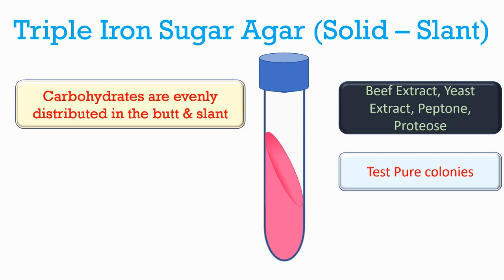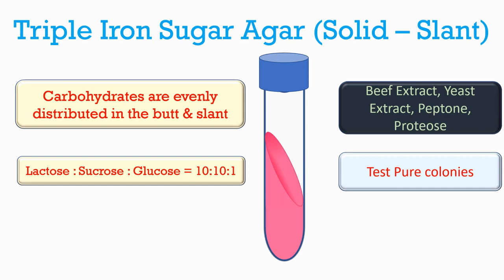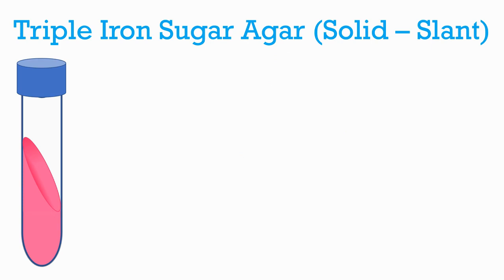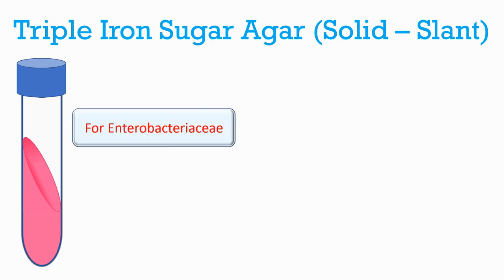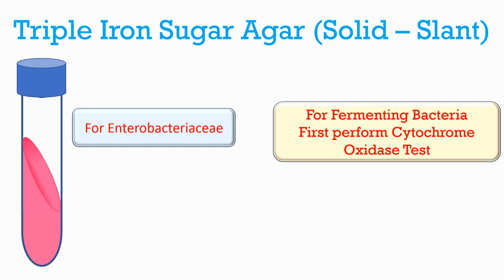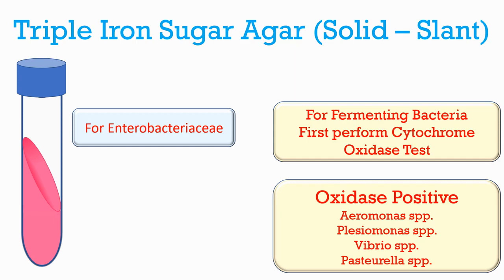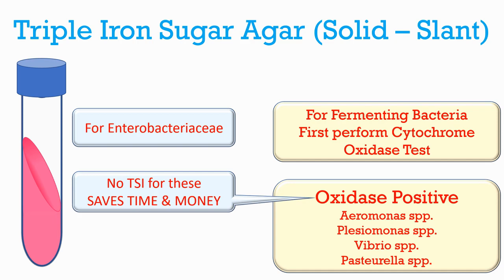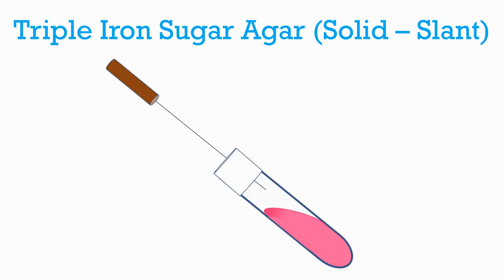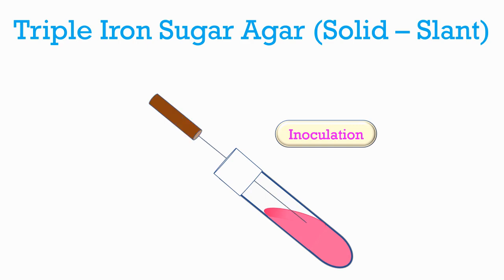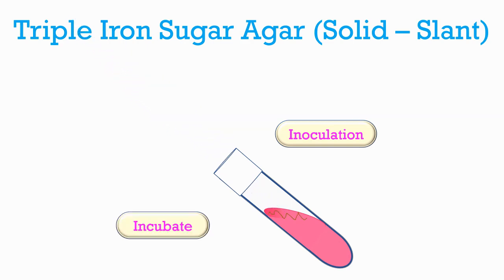Carbohydrates are evenly distributed through the slant and butt. The concentration ratio of lactose to sucrose to glucose is 10:10:1. TSI agar should be used mainly for differentiating members of the family Enterobacteriaceae. Before using TSI on fermenting bacteria, the cytochrome oxidase test should be performed to differentiate other genera such as Aeromonas, Plesiomonas, Vibrio, and Pasteurella species, which are oxidase positive. It is advisable not to use TSI for oxidase-positive fermenting bacteria. The slant is inoculated by stabbing with a straight wire, and while removing the wire, the slant is streaked with a back-and-forth motion.